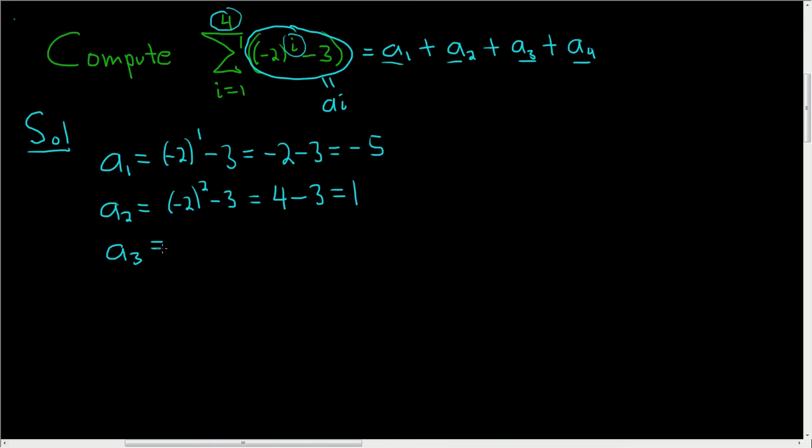a sub 3 is equal to negative 2 cubed minus 3. 3 is odd, so we're not just going to get an 8, we're going to get a negative 8, minus 3, and that's equal to negative 11.